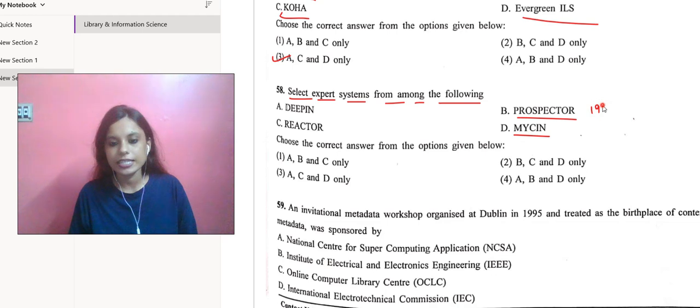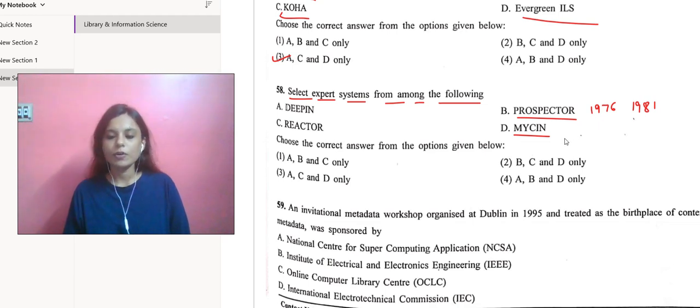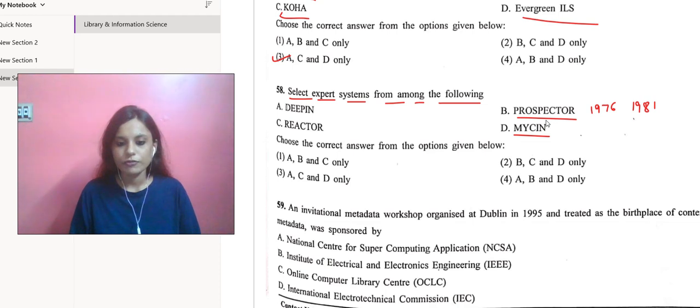Then we can also consider the system called PROSPECTOR, which was developed between 1976 and 1981. The main developers were Richard Duda, John Gaschnig, Peter Hart, René Reboh, and Nils Nilsson. The original research was performed at SRI International, located at Menlo Park, currently in California.